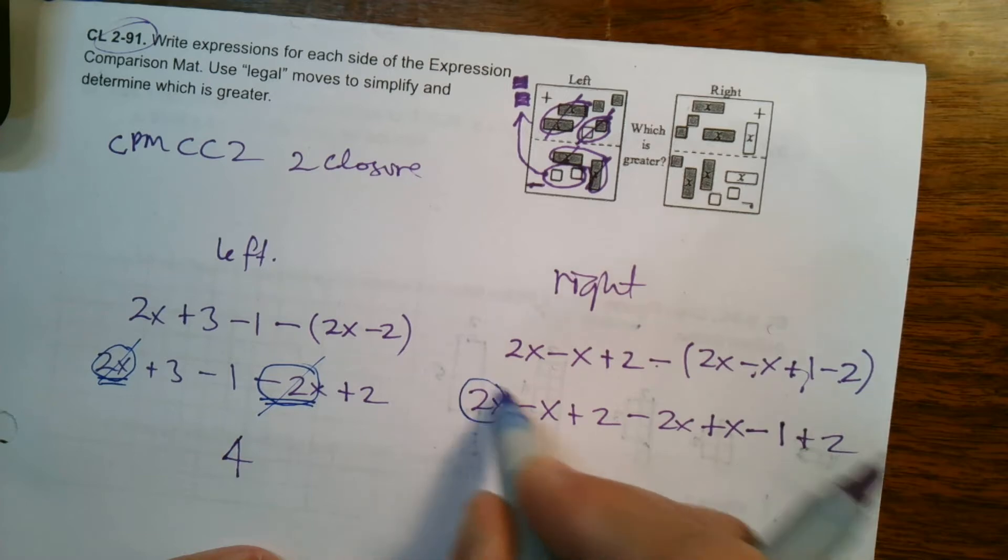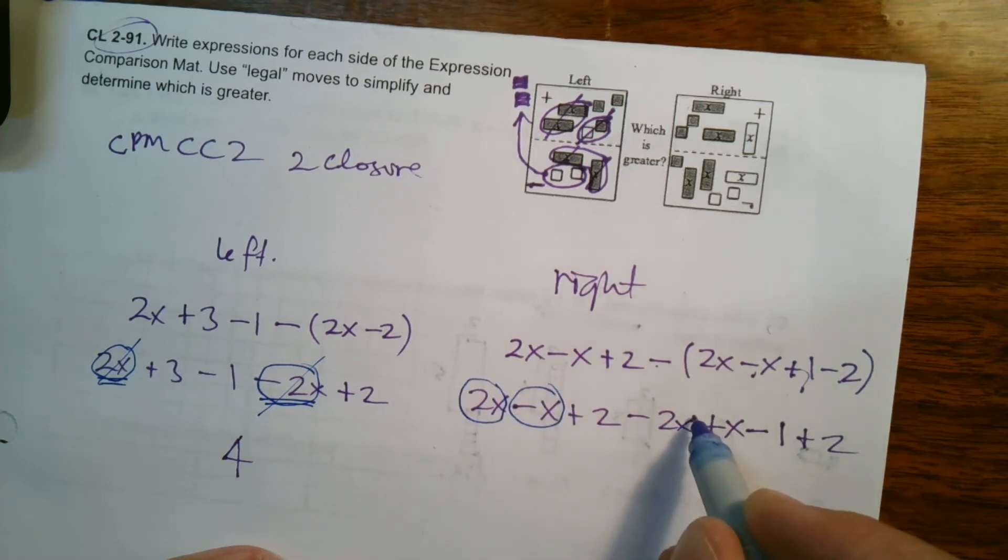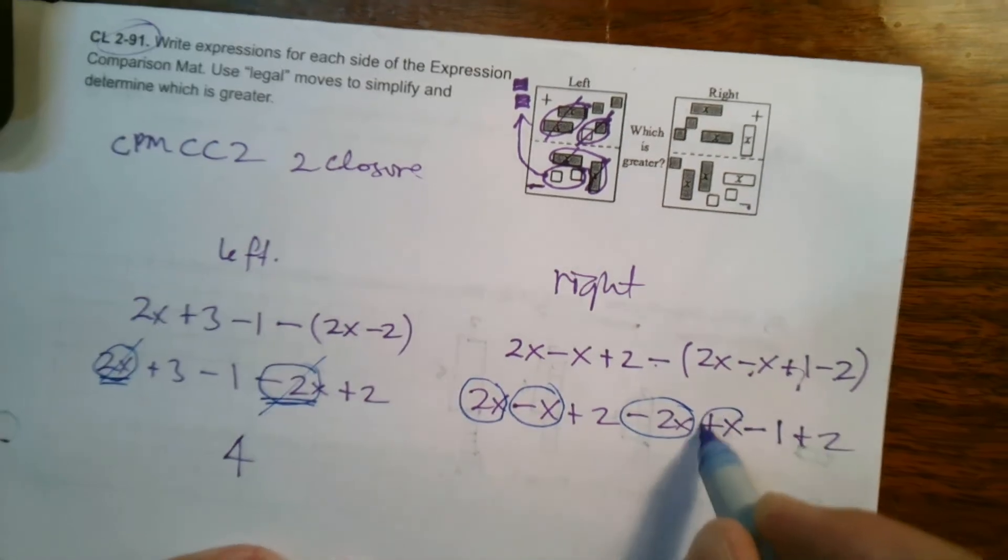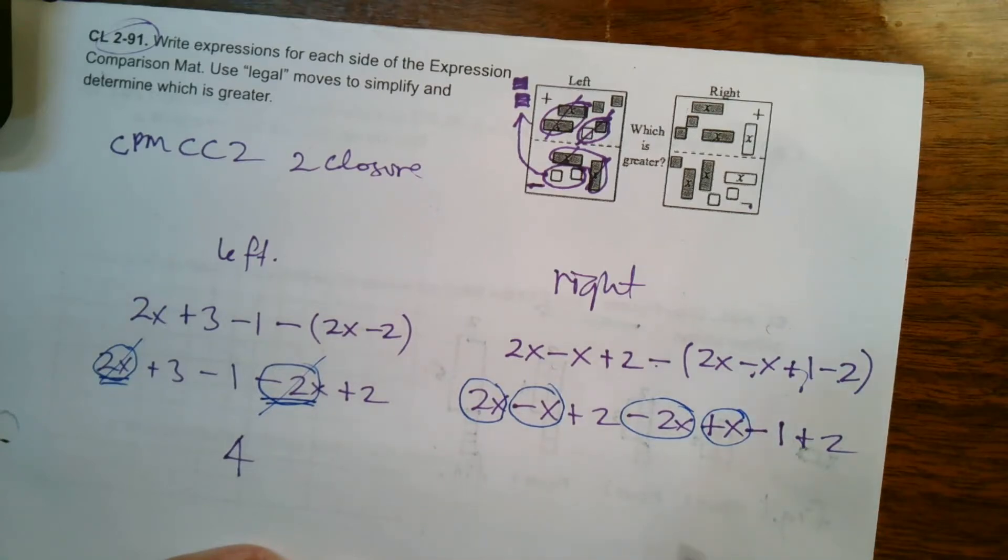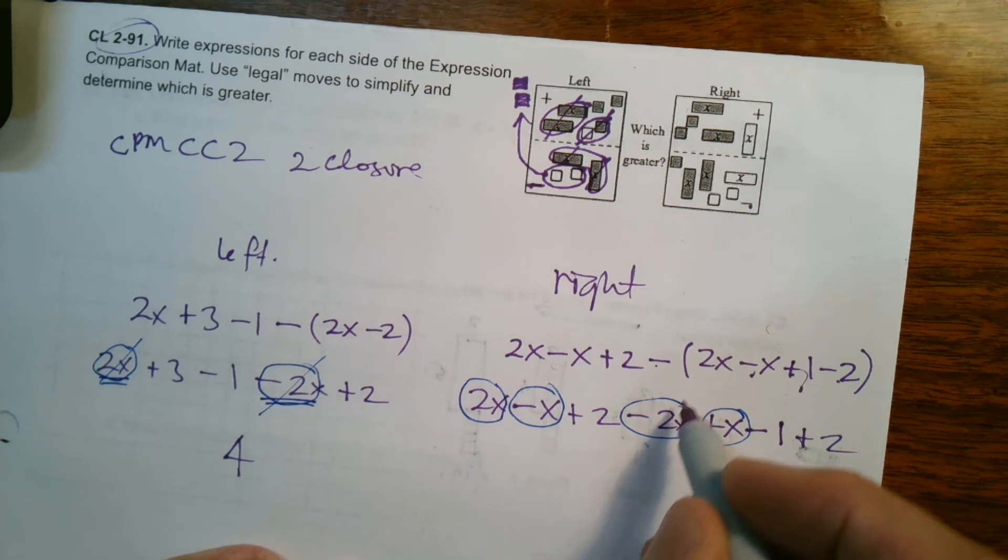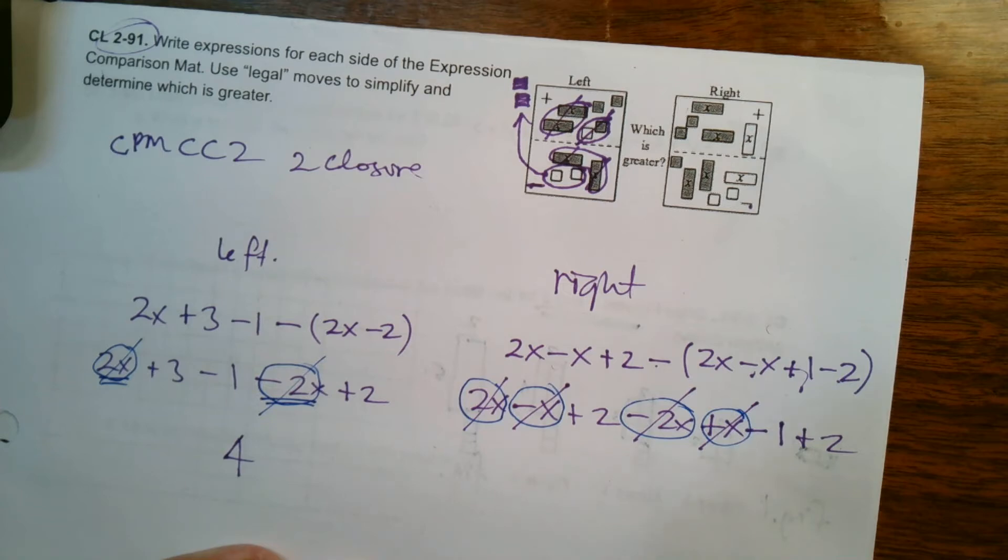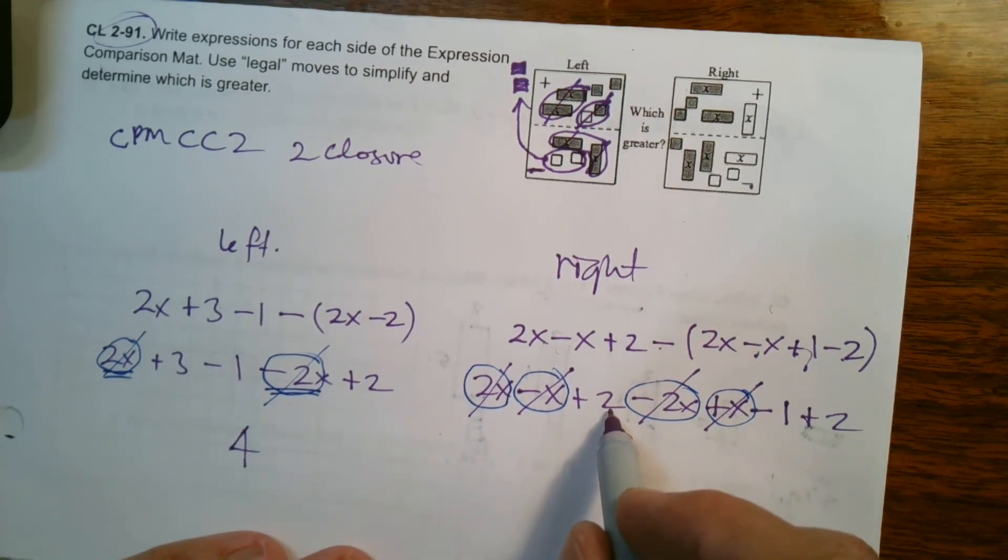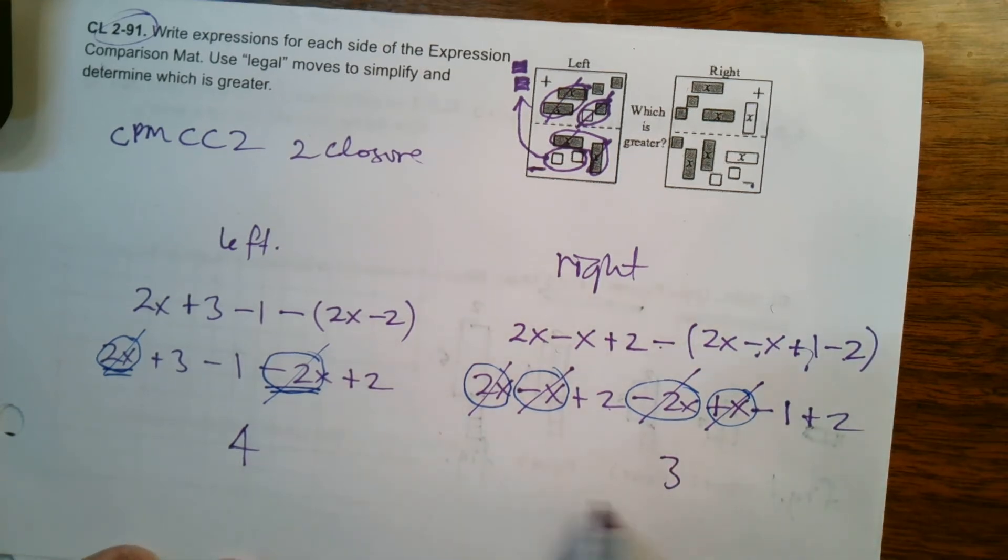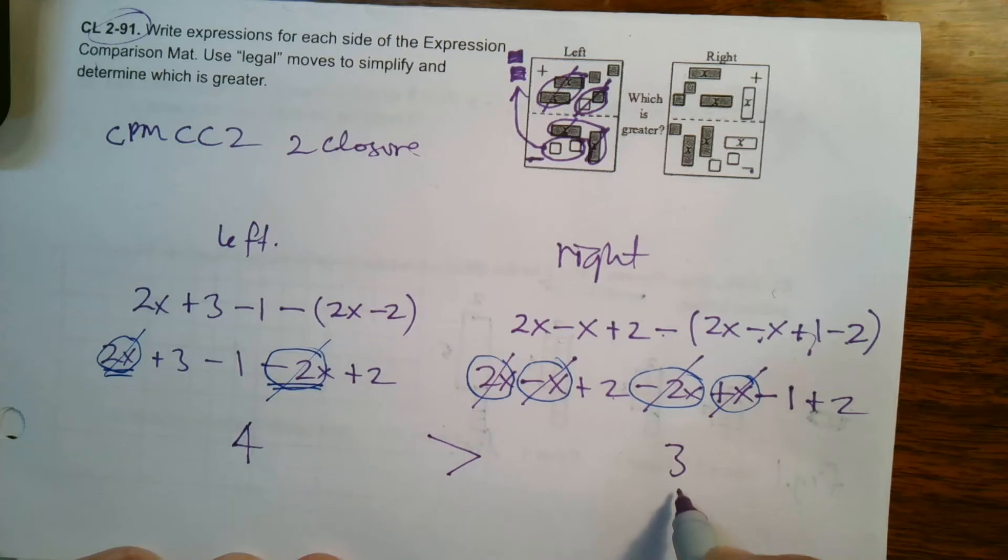And then we can combine like terms. So I have a 2x, a negative x, a negative 2x, and a positive x. So if I look, the 2x and negative 2x, those cancel each other out. Negative x and positive x cancel each other out. Once again, all the x's are gone. So then I look at my numbers: two minus one is one, plus two is three. So four left is greater than right three.